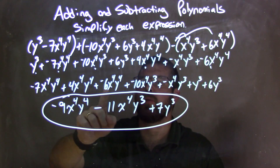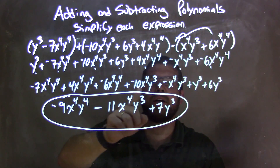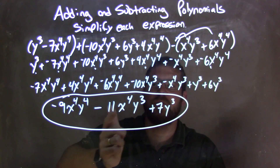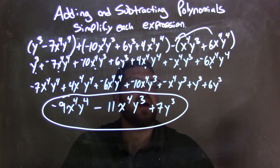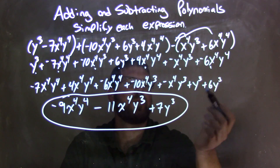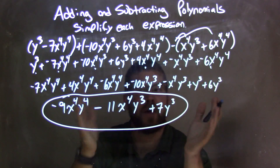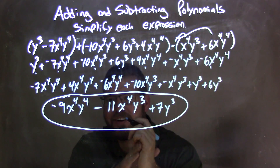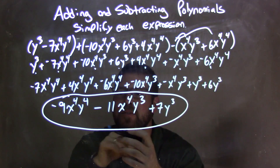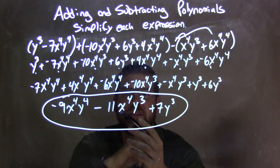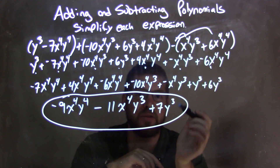It's tricky because we have multivariables here: x to the fourth y to the fourth first, then x to the fourth y to the third next, then y to the thirds at the end. Negative seven plus four plus negative six was negative nine, so negative nine x to the fourth y to the fourth. Negative ten plus negative one was negative eleven x to the fourth y to the third. And one plus six is seven, so plus seven y to the third — giving us our final answer: negative nine x to the fourth y to the fourth, minus eleven x to the fourth y to the third, plus seven y to the third.